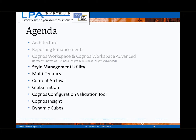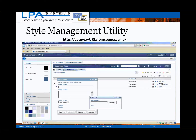Next up on the agenda is the Style Management Utility. This is a new graphical interface that provides a much easier method for customizing or skinning the Cognos Connection portal. It provides access to virtually every section and attribute within Cognos Connection and includes a custom palette builder to set colors based on your organization's standards. There are very simple procedures for system administrators to package and deploy the customized files and then publish them for use by end users.